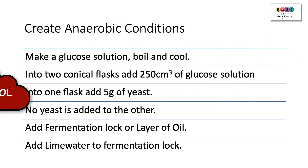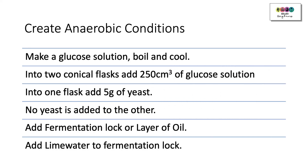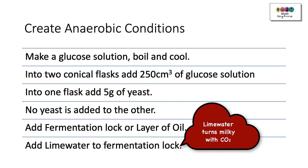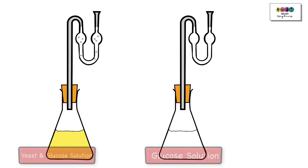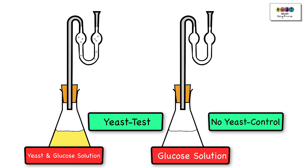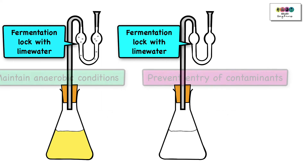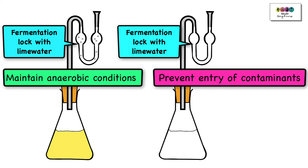Yeast is not added to the other flask because this is your control. Then add a fermentation lock to both flasks, filled with lime water. When set up, you should have one vessel with yeast and glucose solution — that's your test apparatus — and the other vessel with just glucose solution and no yeast — that's your control. The fermentation locks are really important because they maintain anaerobic conditions and also prevent the entry of contaminants into your vessels.